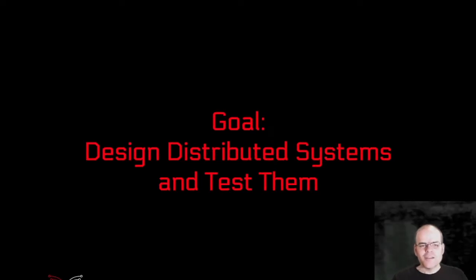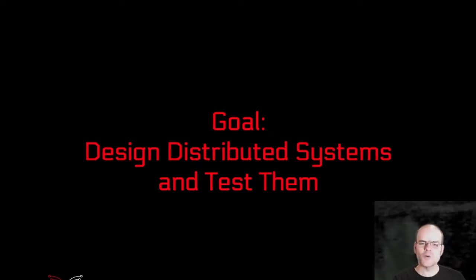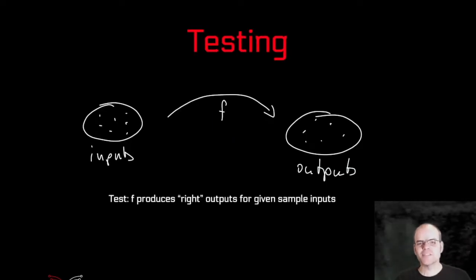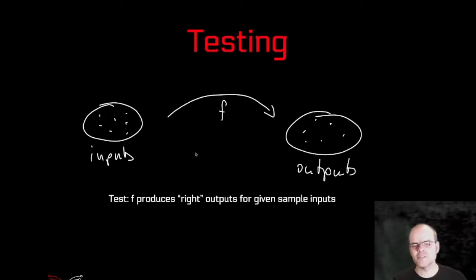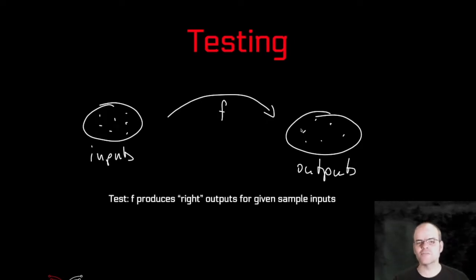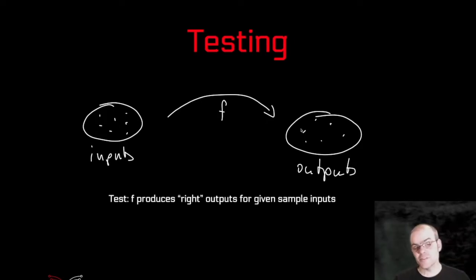The goal that we have is to design distributed systems and also to test them. So let's talk about testing first. What does it mean to test some program? You can view the program as some function that takes some inputs and produces some outputs. Testing for correctness means that you have some inputs and you check that the outputs are the ones that you expect.